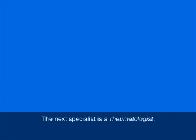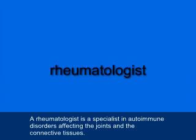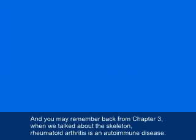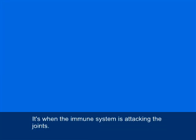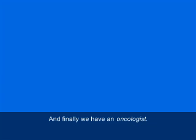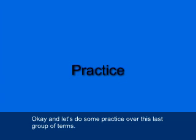A rheumatologist (R-H-E-U-M-A-T-O-L-O-G-I-S-T) is a specialist in autoimmune disorders affecting the joints and connective tissues — for example, rheumatoid arthritis, which is when the immune system attacks the joints. Finally, an oncologist (O-N-C-O-L-O-G-I-S-T) is a specialist in treating cancer.